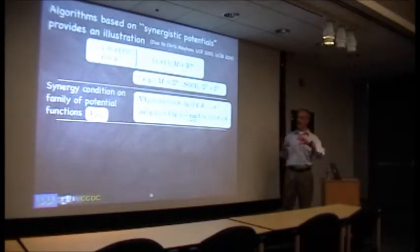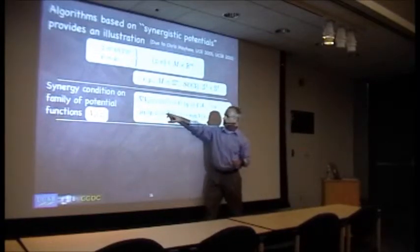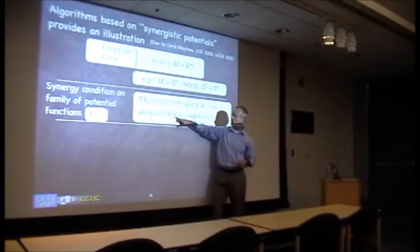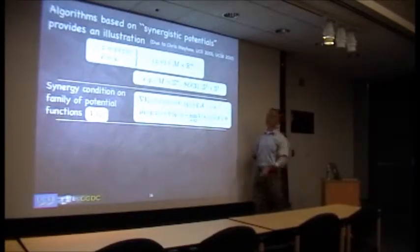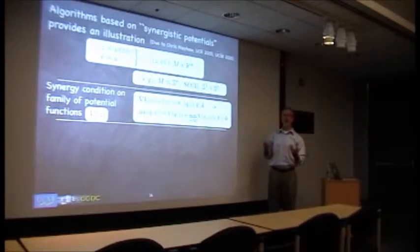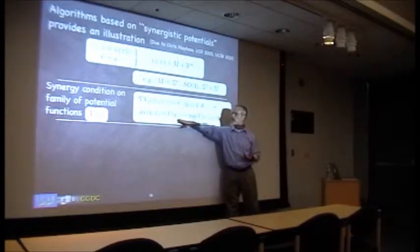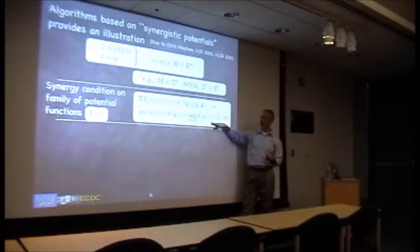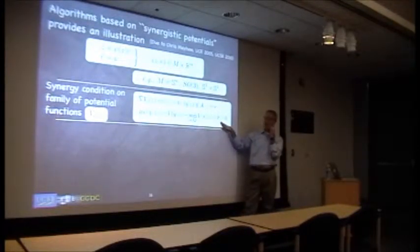So maybe this set A denotes where you want to be—a certain condition should apply to the family of functions. I should have written the subscript Q everywhere. But basically, Chris said, look, if you have a family of potentials where when this is zero and you're not where you want to be, this quantity is positive, you can build a hybrid feedback to stabilize.